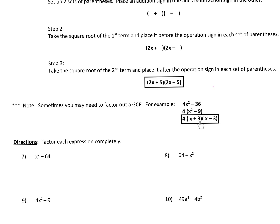After we bring down the 4, we set up two sets of parentheses — one gets a plus and one gets a minus. Take the square root of the first term and put it here and here, and take the square root of the second term and put it there and there. This would be fully factored.